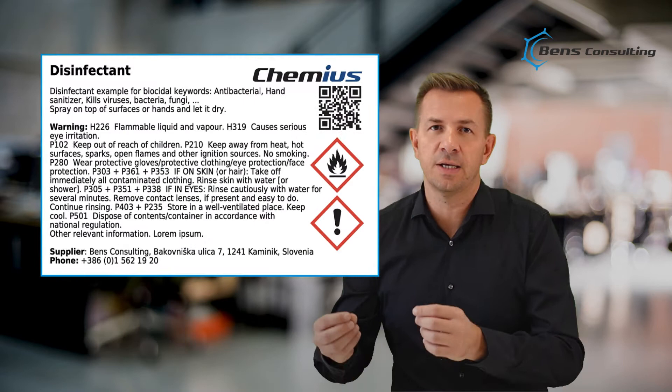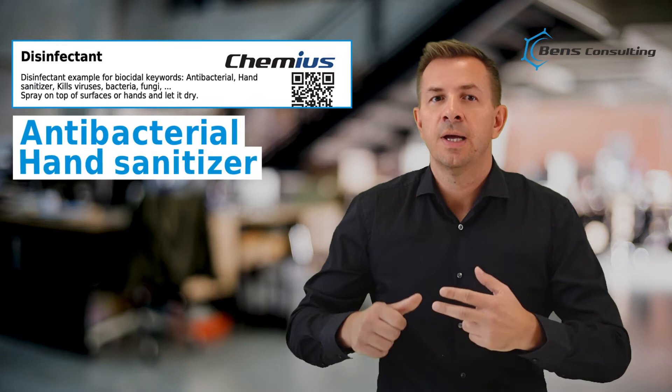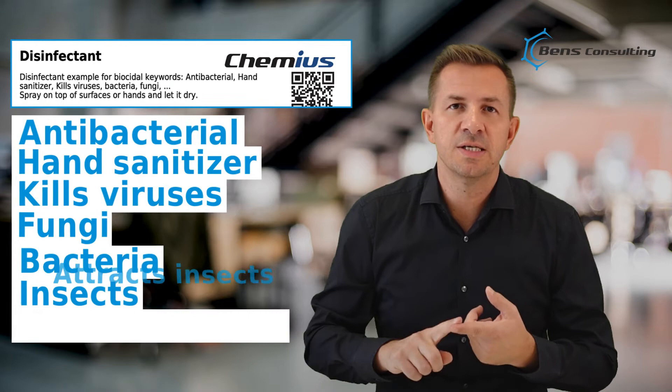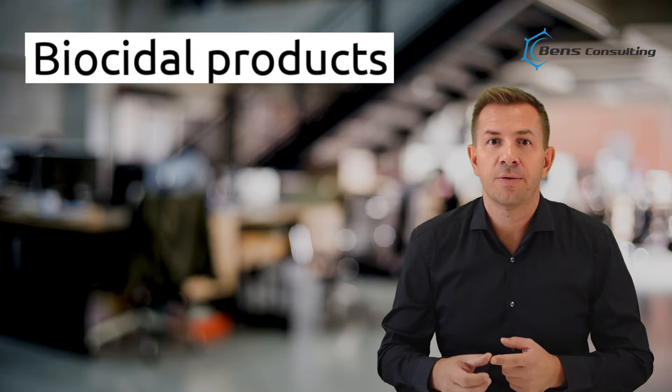Here are some examples of biocidal claims that clearly show a biocidal intention of a product: antibacterial, hand sanitizer, kills viruses, fungi, bacteria, insects, attracts insects, repellents, or repel insects. It is important to note that biocidal products don't include only antibacterial, antiviral, and anti-fungi products. They include a wide variety of products that fall under different product types.